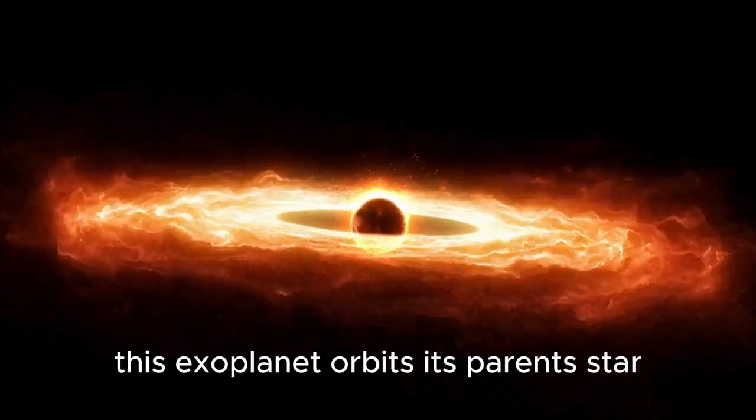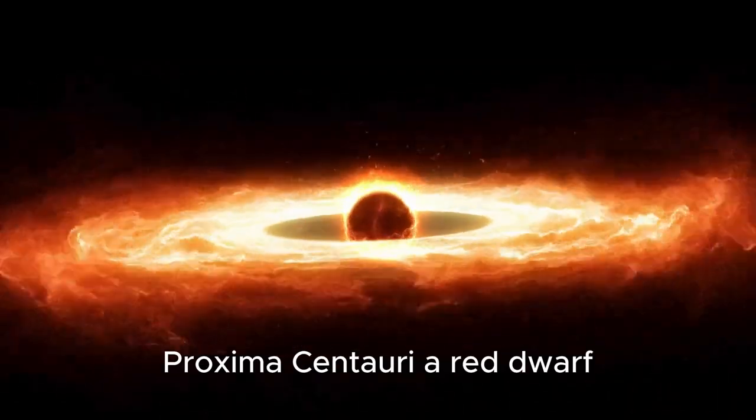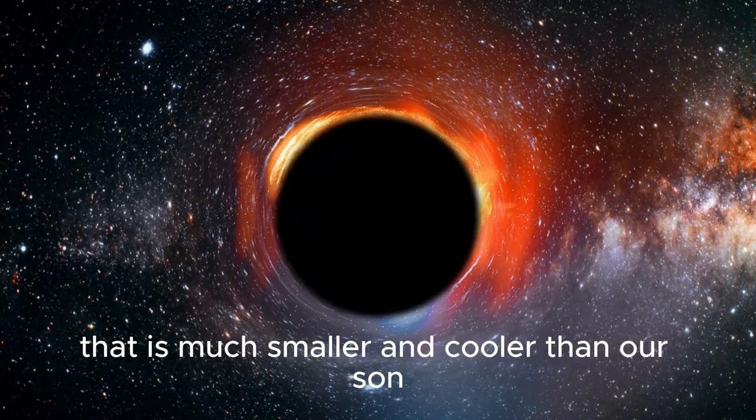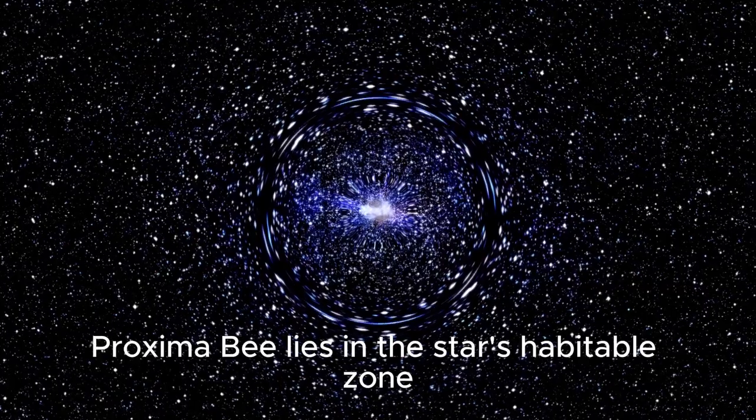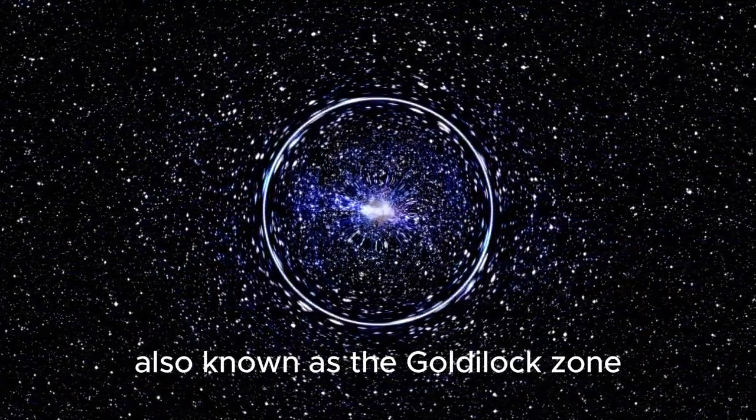This exoplanet orbits its parent star, Proxima Centauri, a red dwarf that is much smaller and cooler than our sun. Discovered in 2016, Proxima b lies in the star's habitable zone, also known as the Goldilocks zone.